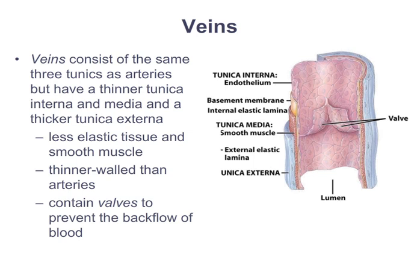Veins are the third blood vessel type, carrying blood back to the heart. They have the same three tunic layers as arteries — tunica externa of connective tissue, tunica media of smooth muscle, and tunica interna of simple squamous epithelium — but these layers are much thinner because veins carry low-pressure blood. Another key difference: veins have one-way valves that allow blood to travel only toward the heart. Since blood moves so slowly through veins it would otherwise flow backwards, these valves maintain direction and enhance venous return.